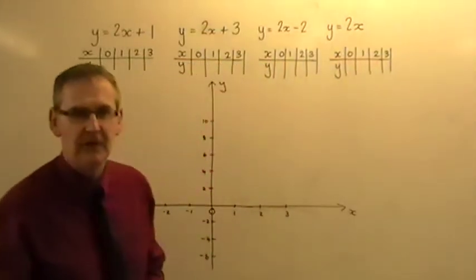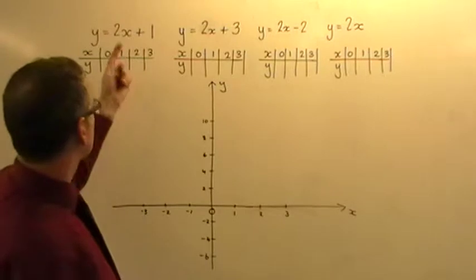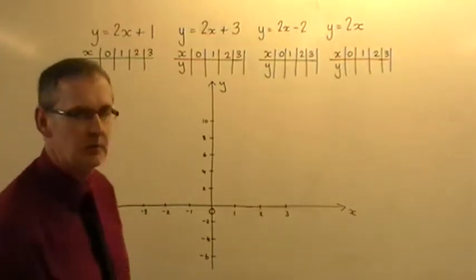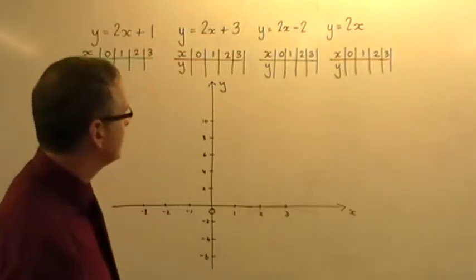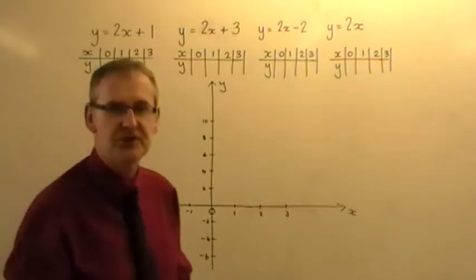In this video I'm going to look at four different straight line graphs: y equals 2x plus 1, y equals 2x plus 3, y equals 2x minus 2, and y equals 2x.